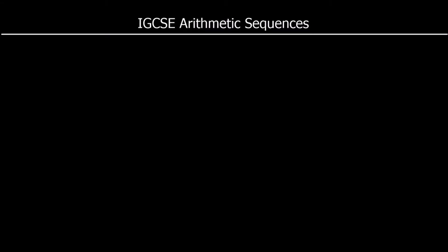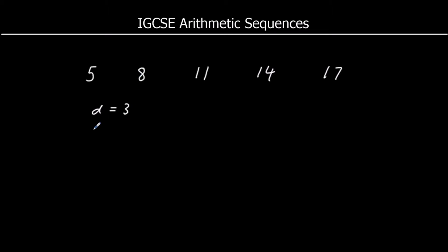An arithmetic sequence is a sequence that has a common difference — it goes up by the same amount each time. If we had a sequence that went 5, 8, 11, 14, 17, and so on, we have an arithmetic sequence; it goes up by 3 each time. So we can say the common difference, which we'll call d, is 3, and the first term, which we'll call a, is 5.